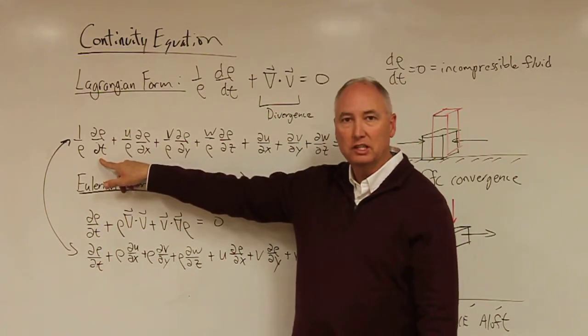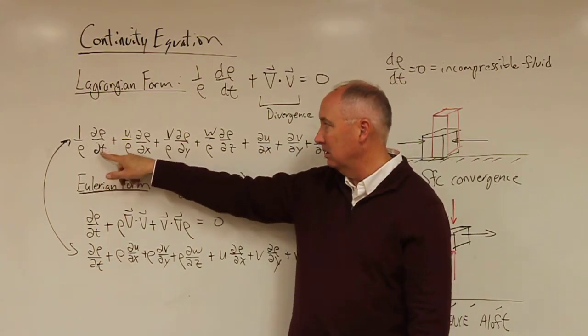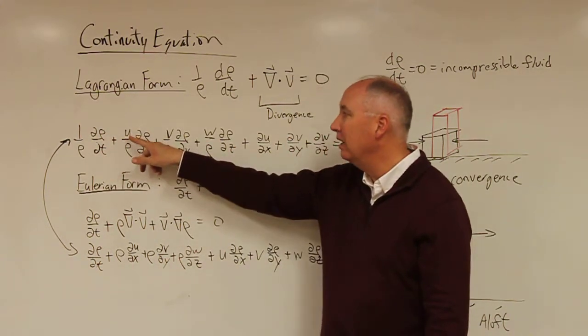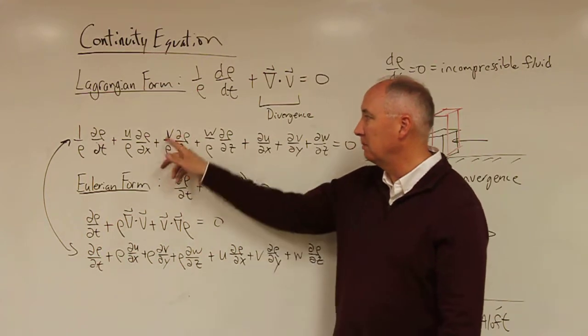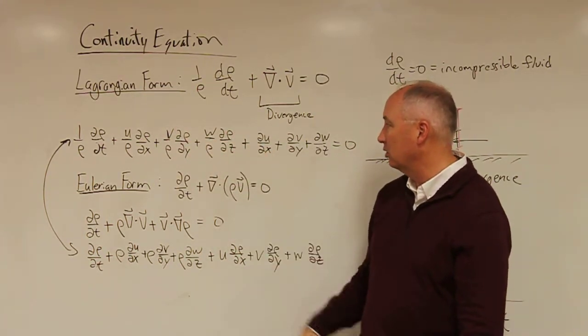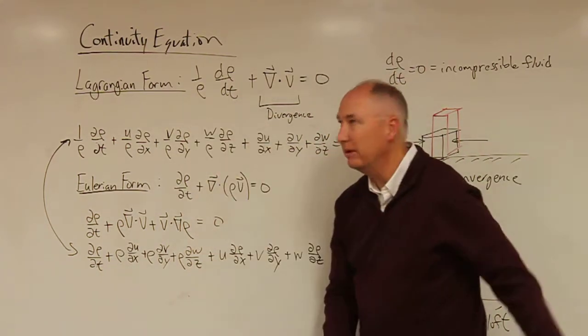But it's the partial derivative of density with respect to time, plus u times partial rho over partial x plus v partial rho over partial y plus w partial rho over partial z. That is the expansion of the total derivative.